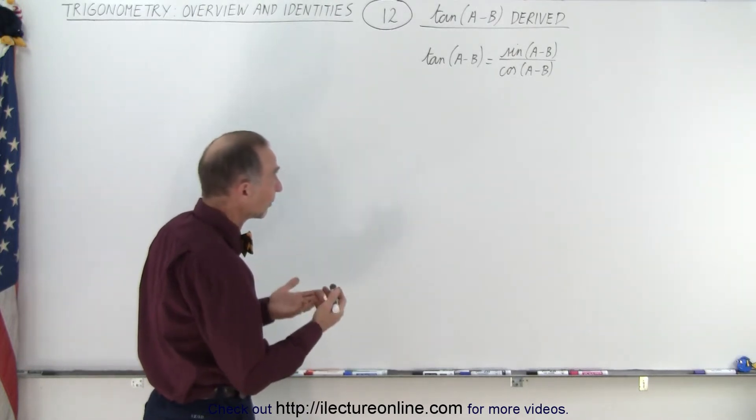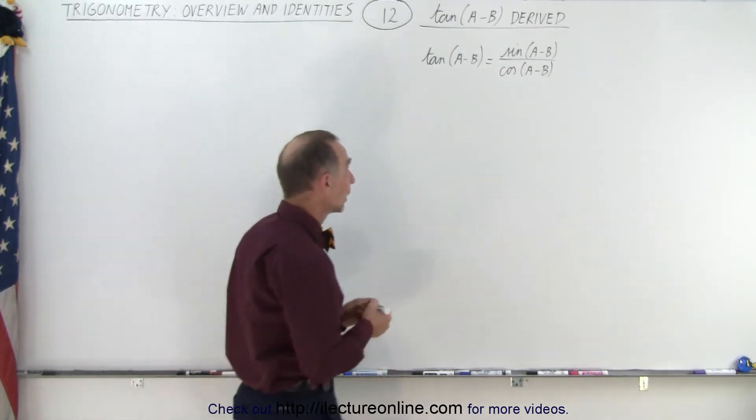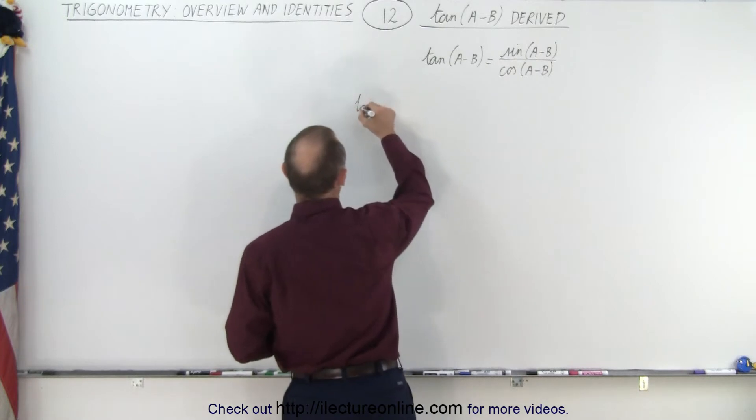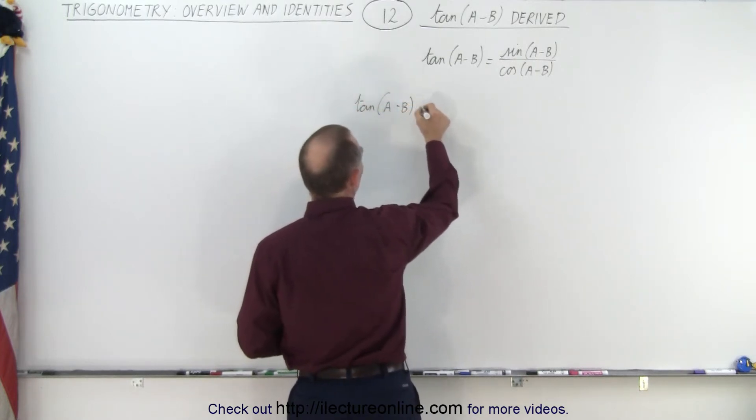First, let's replace the sine of the difference of two angles and the cosine of the difference of two angles with their identities. So we can then say that the tangent of A minus B can be written as...